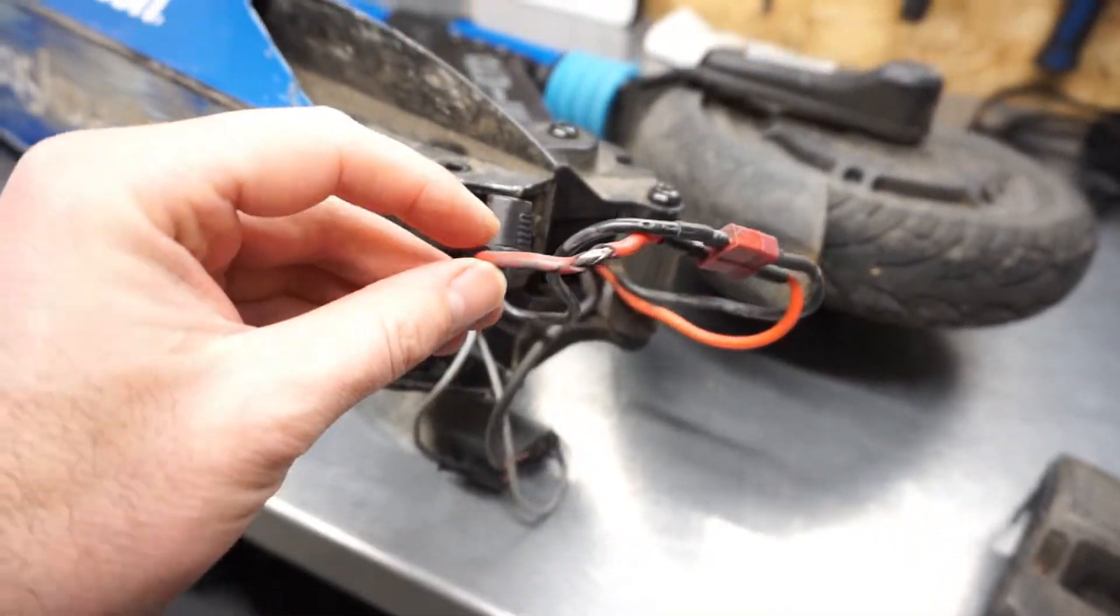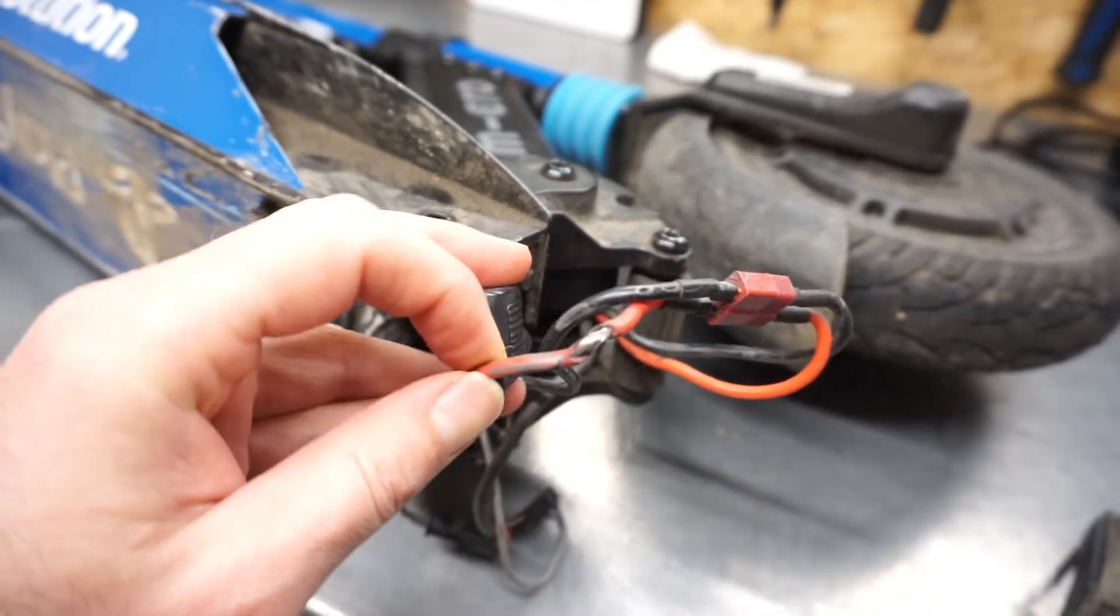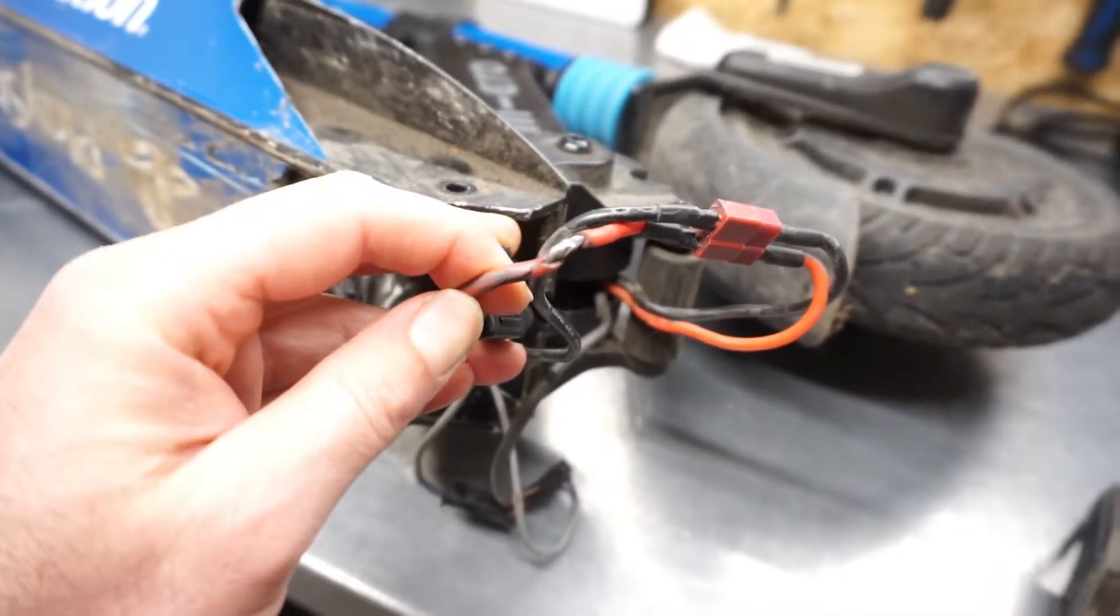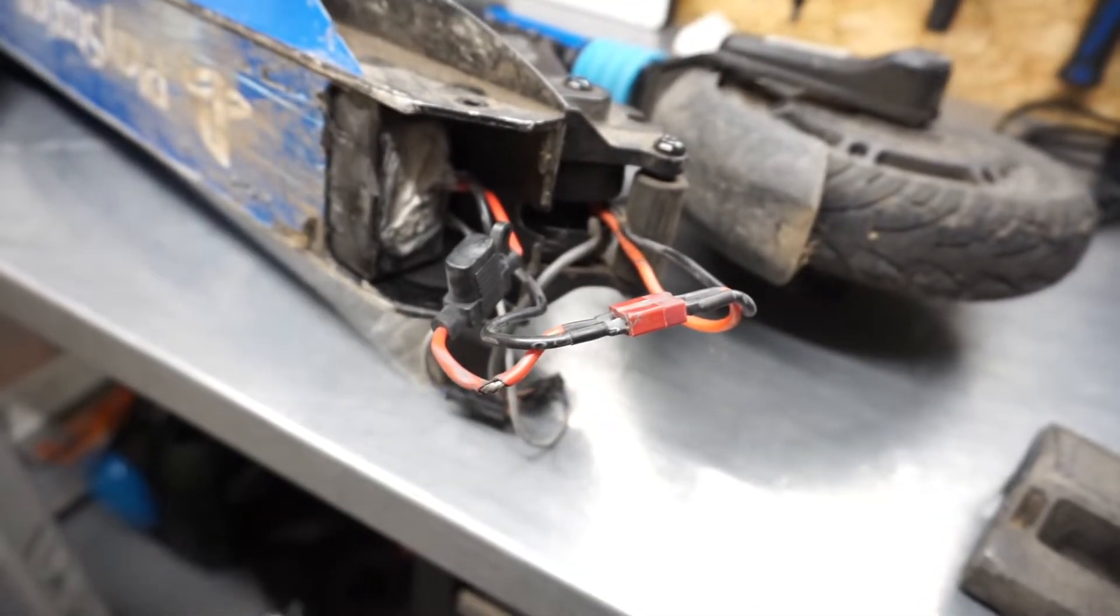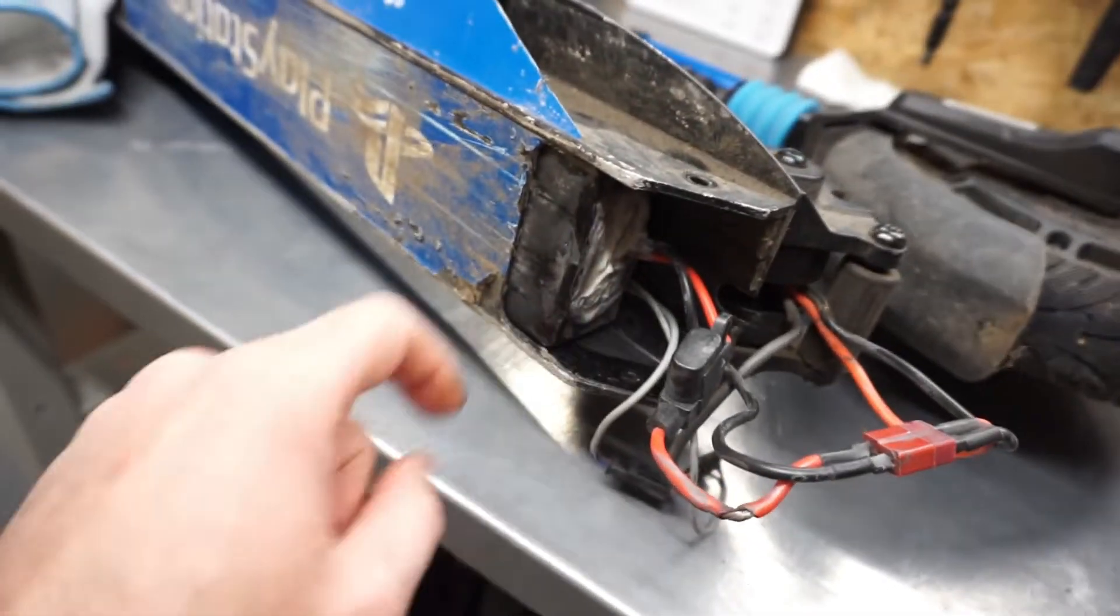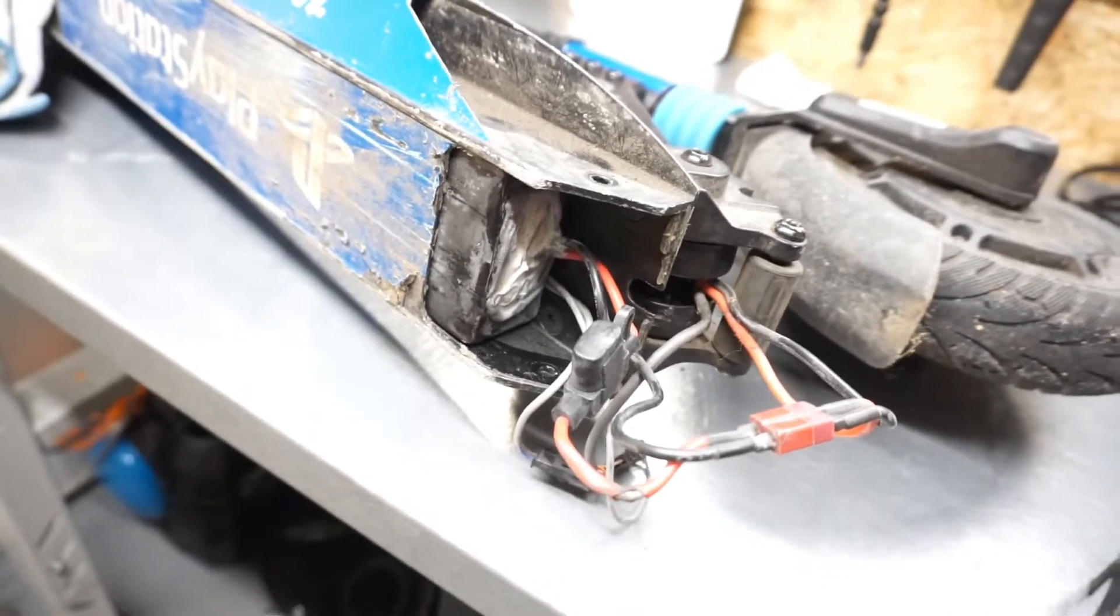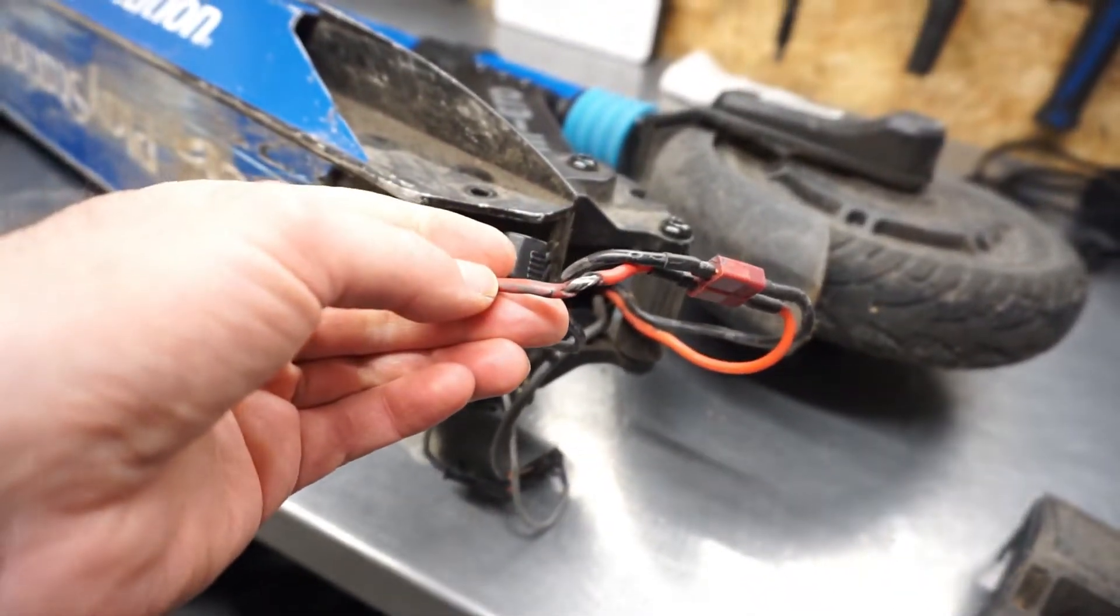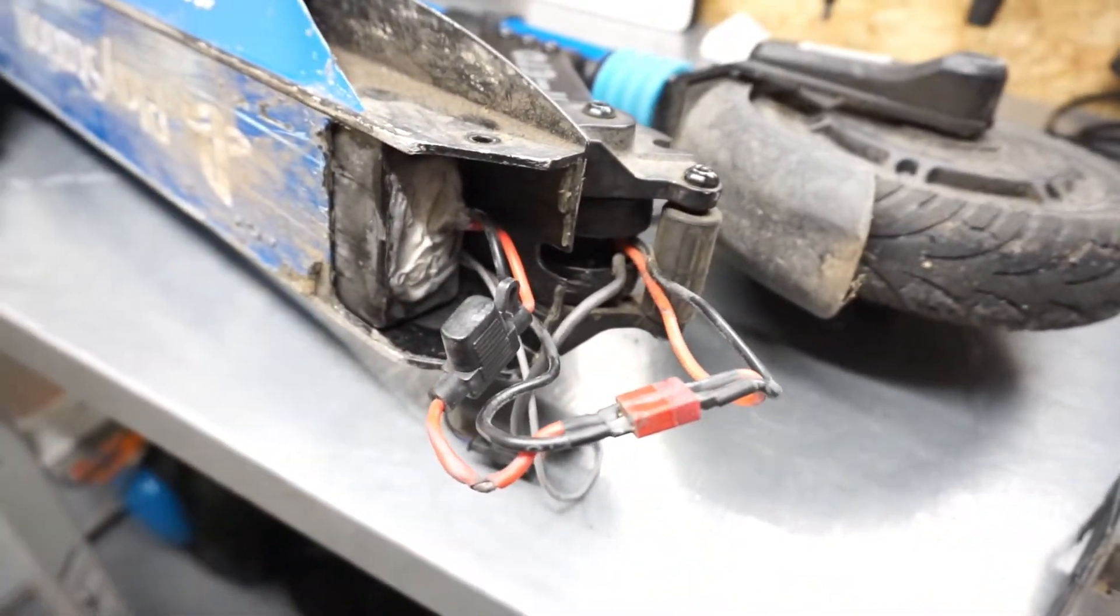I noticed straight away some damage on this positive cable. The insulation is stripped off. But it doesn't affect actually how this scooter works. Fortunately, there was no short circuit on this painted surface. But yeah, it's better to fix it before it breaks completely.